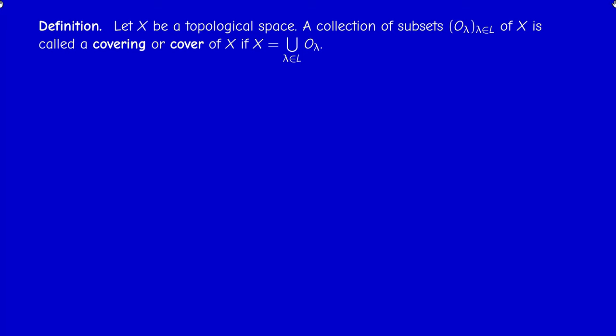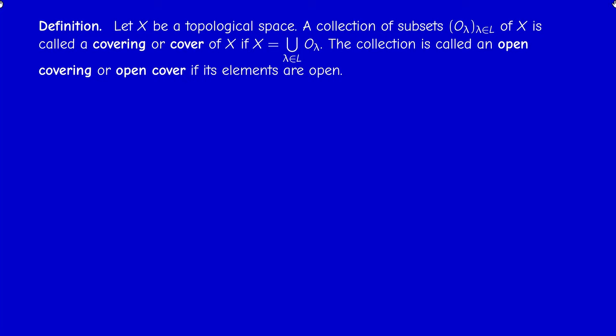Now if you are in a topological space where the notion of open sets is given, and if all elements of this collection are open, then we say we have an open covering or open cover. The word 'covering' can be used as a noun or as a verb — we also say that a collection covers a space.